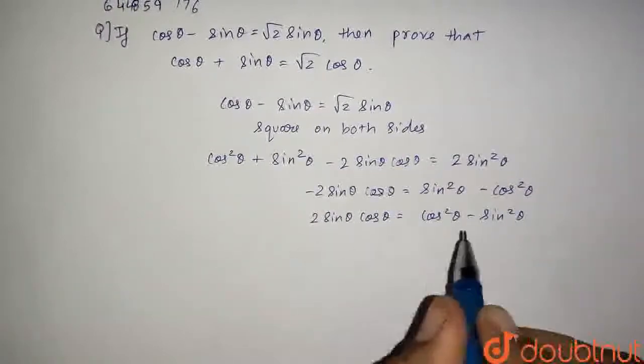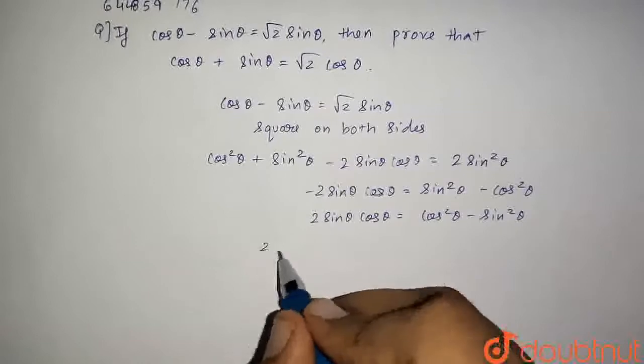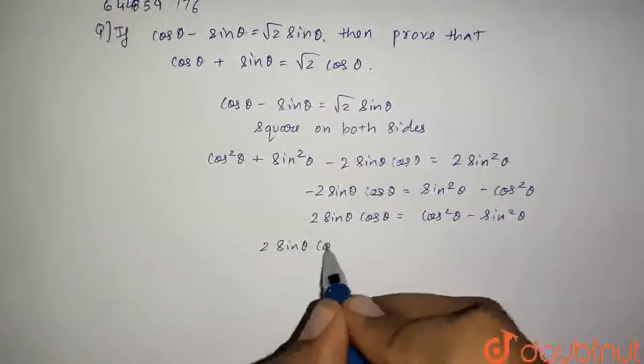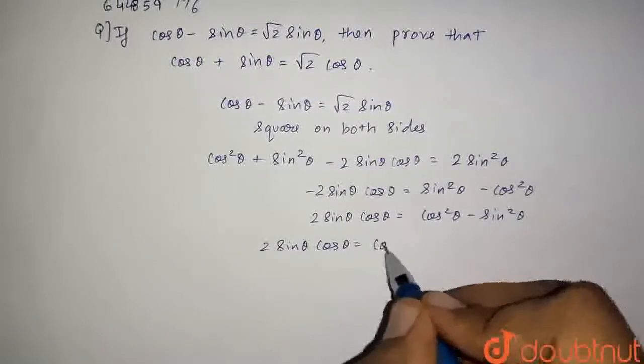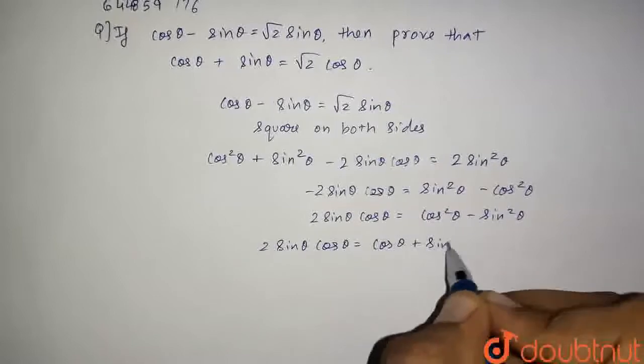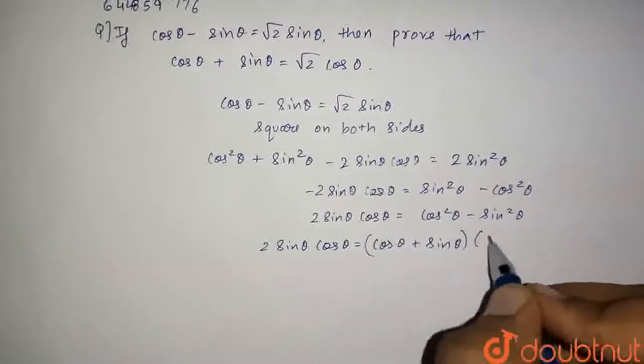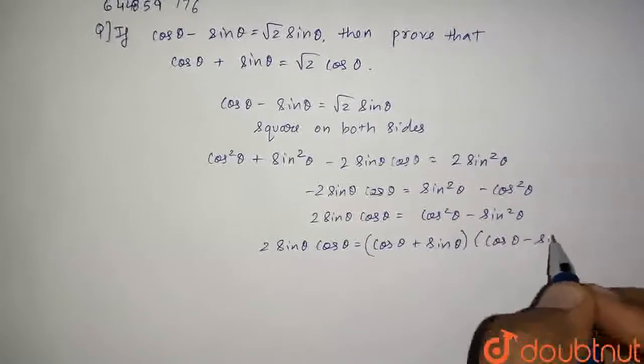Now, a² minus b² can be written as (a + b)(a - b), so we can write 2 sin θ cos θ is equal to (cos θ + sin θ)(cos θ - sin θ).